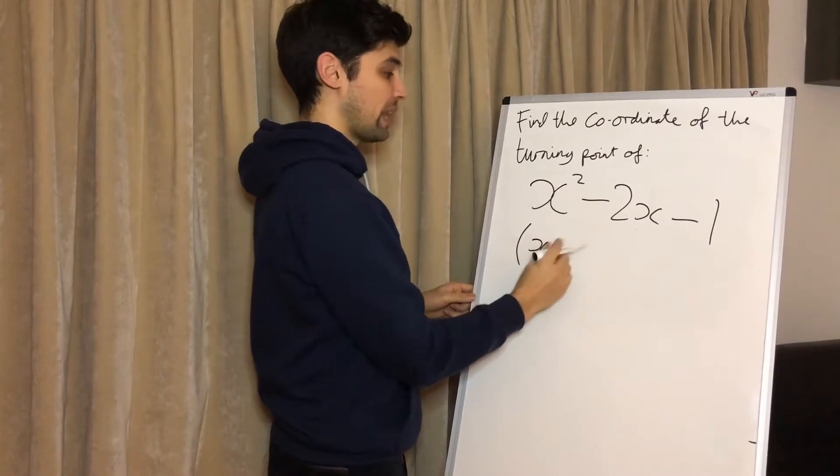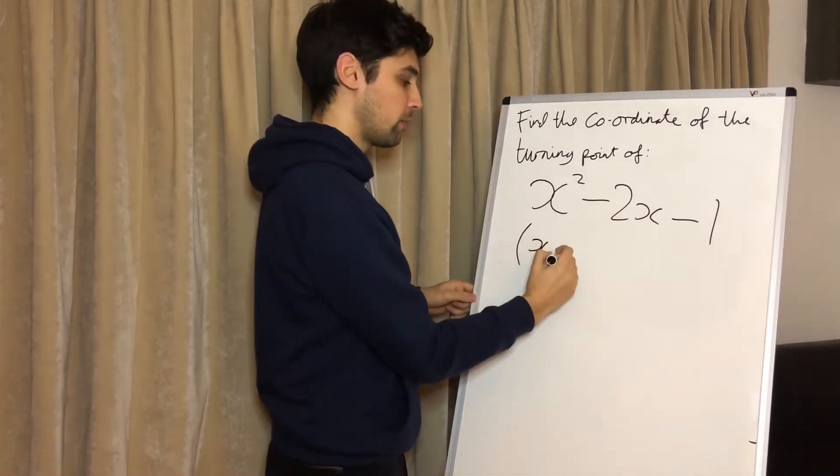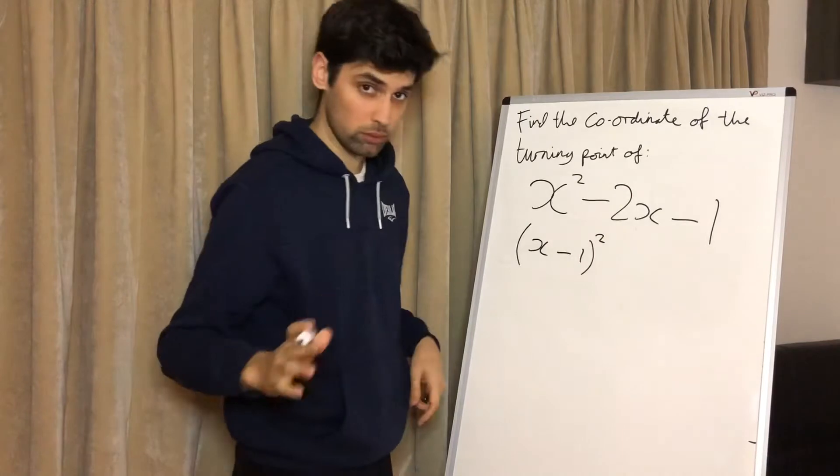We bring the x down and half of this number, so it's minus two, so we're going to write minus one squared.